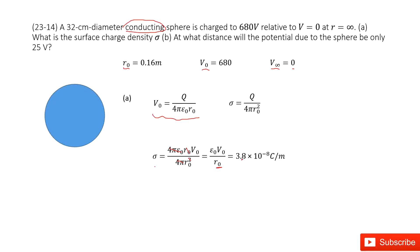The next one asks you, at what distance will the potential be 25 volts? So that means at one position, V becomes 25 volts. Can you determine this r?